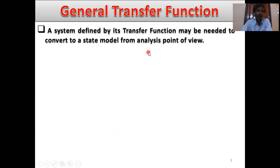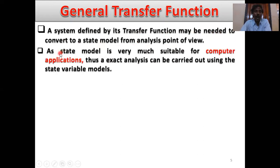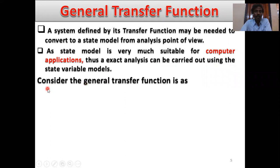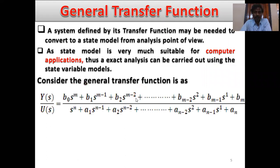General transfer function. What is the general transfer function? A system defined by its transfer function may need to be converted to a state model from an analysis point of view. A state model is very much suitable for computer applications. Thus exact analysis can be carried out using state variable models. Consider the general transfer function G(s) = Y(s) / U(s), where Y(s) is the system output and U(s) is the system reference input.